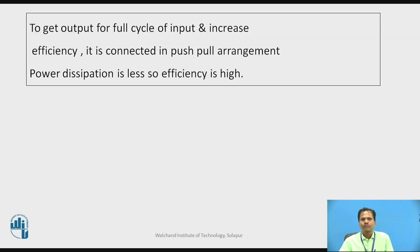To get the output for full cycle of input AC signal for both positive and negative half cycle and increase efficiency of the power amplifier, Class AB power amplifier is connected in push-pull arrangement. Since each transistor in the amplifier conducts for just more than half cycle but less than full cycle of input AC signal, the power dissipation of each transistor is much less. Therefore, the efficiency of Class AB power amplifier is much higher.